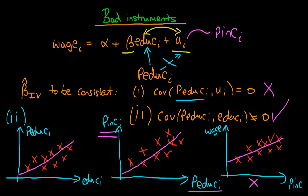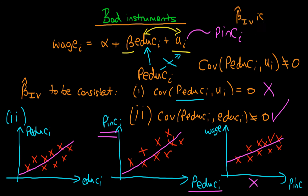Since parental education is correlated with parental income, and parental income is contained within the error UI, parental education is actually correlated with UI. We have a violation of the first condition — there is almost certainly a non-zero covariance in the population of parental education with the error UI. Under these conditions, beta hat IV is likely inconsistent, meaning that even as we increase the sample size we still have some bias in our estimates. In the next video I'll provide another example of a bad instrumental variable.